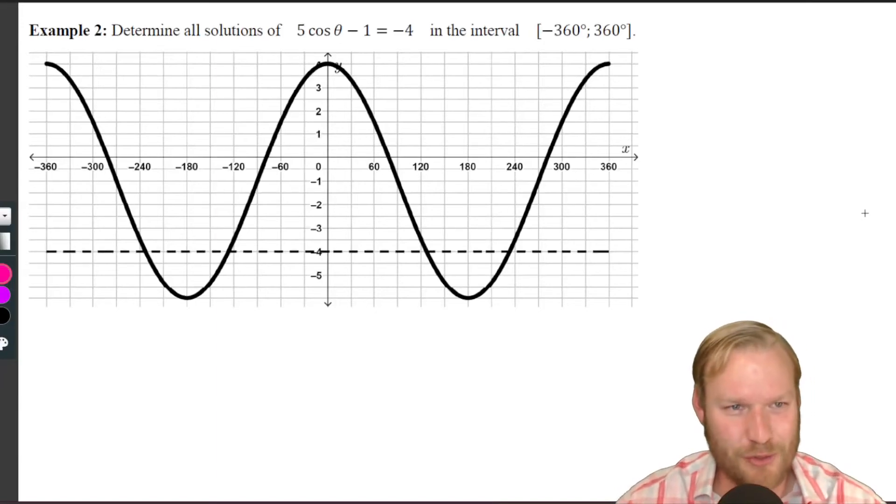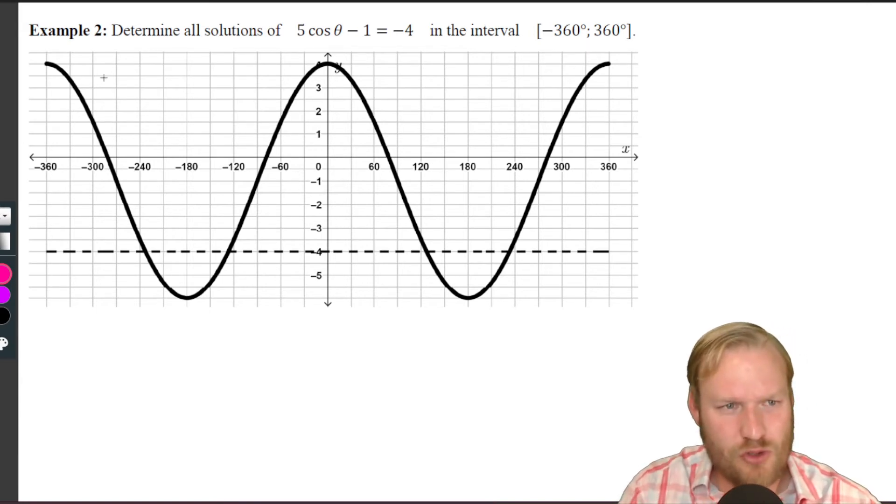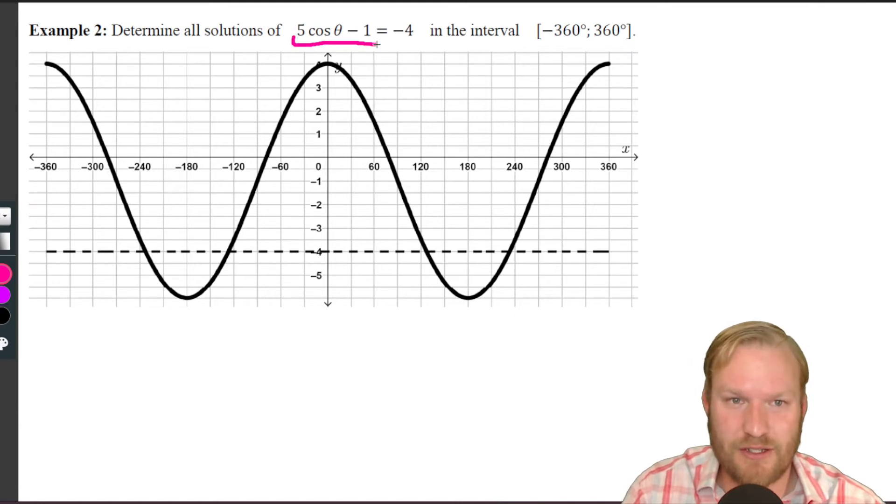Okay, let's head straight into this one. Example 2: Determine all solutions of 5cos(θ) - 1 = -4 in that given interval. So I've drawn the graph for you of 5cos(θ) - 1, and we're trying to see when does it equal negative four. When is that output?